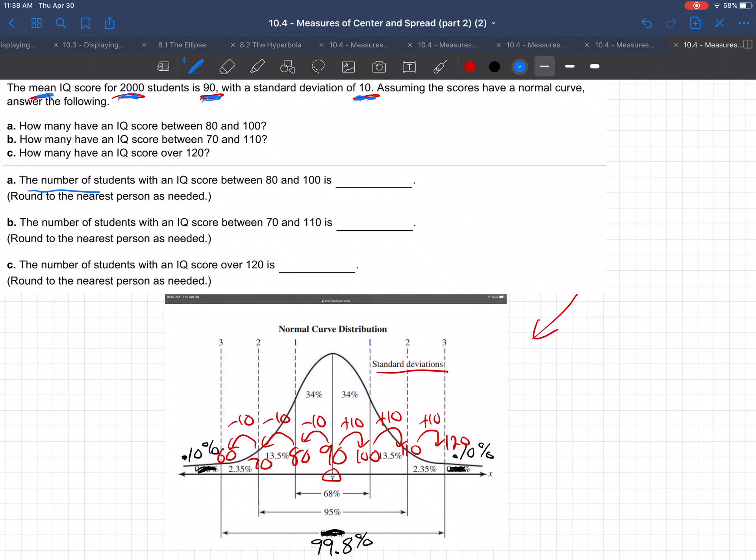How many find the number of students with an IQ score between 80 and 100? Here's 80. Here's 100. That would be 68%. That's what the percentages mean.